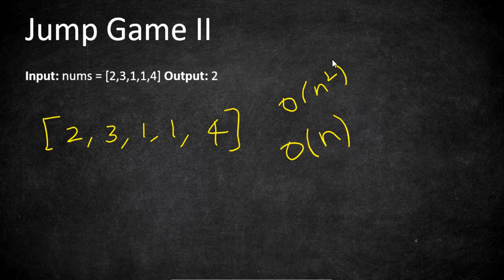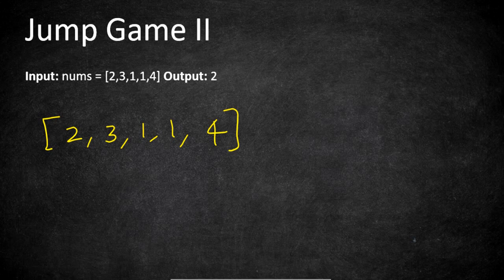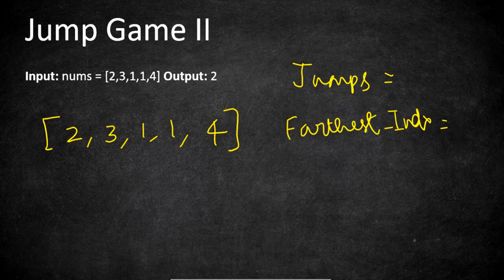To do that, we are going to maintain 3 variables. The first one is jumps, which is the actual number of jumps we are taking to reach the last position — that is going to be our result. The second one is the farthest index, which keeps track of the farthest position we could reach so far in the iterations. The third variable is current position, which helps us keep track of where our current jump has landed.